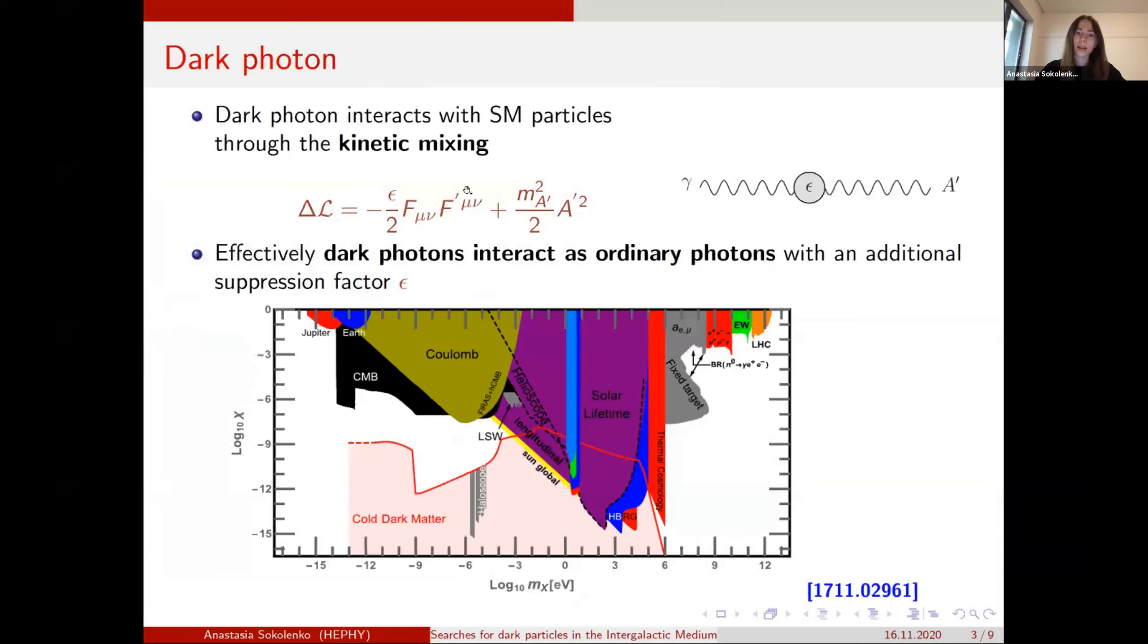So dark photon mixes with ordinary photon via kinetic mixing. And the same as with ordinary neutrinos, because of this term, they can just oscillate. So ordinary photons can oscillate into dark photons, and vice versa.